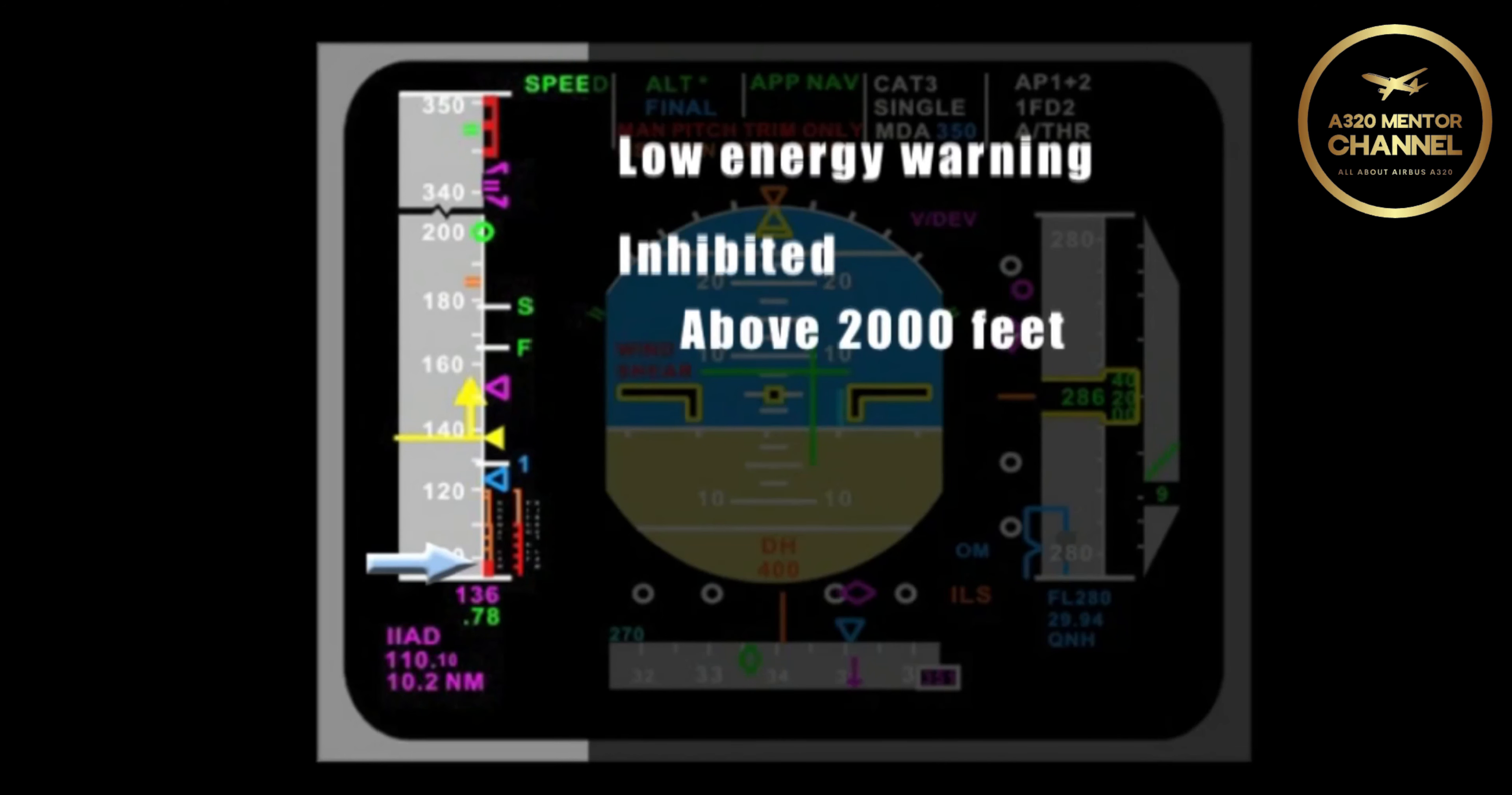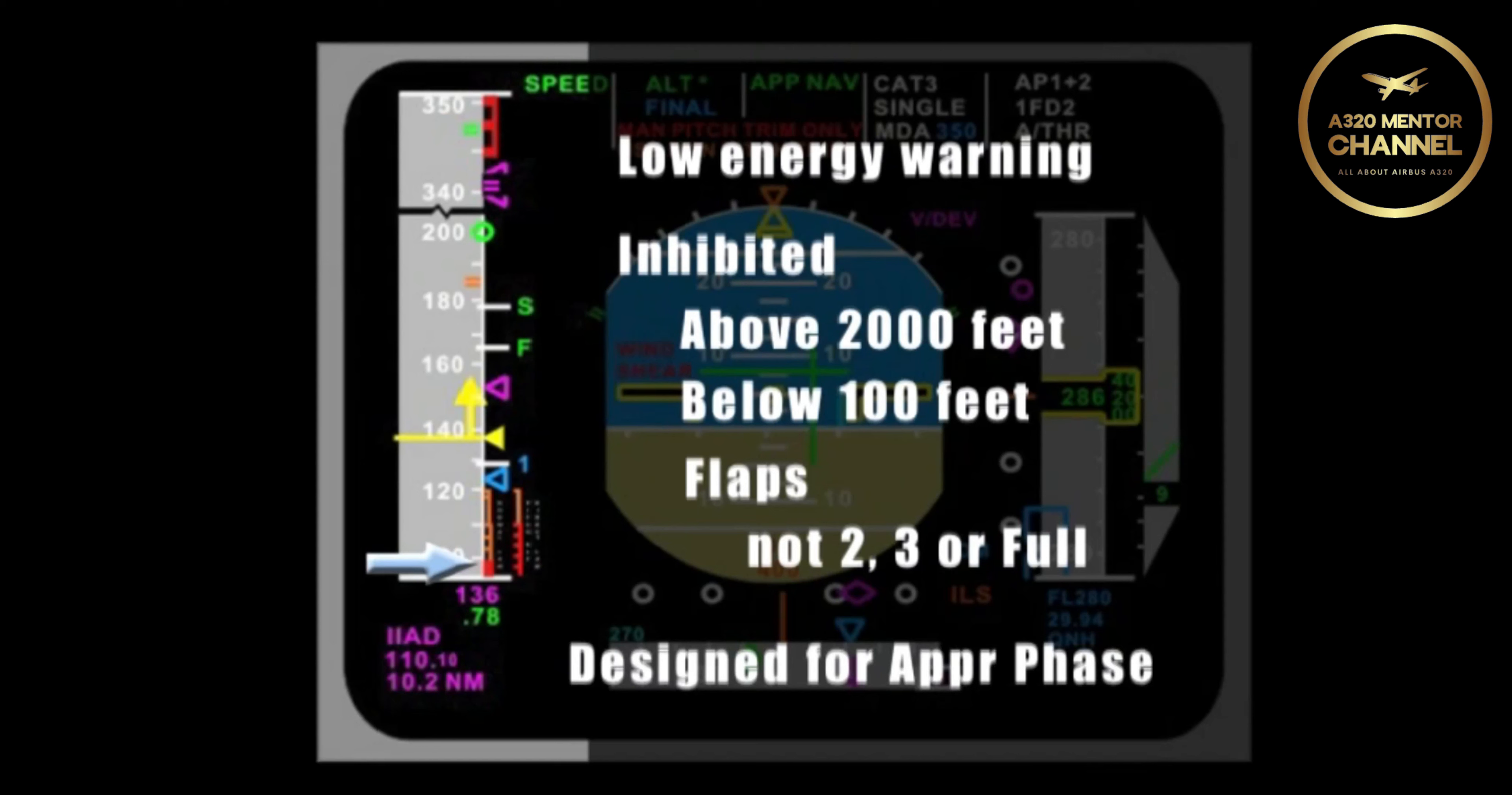This is only available during the approach phase. The warning is inhibited above 2,000 feet, below 100 feet, or any time flaps are not 2, 3, or full. There are other inhibitions, but as you can see, it is basically designed for the approach phase of flight.